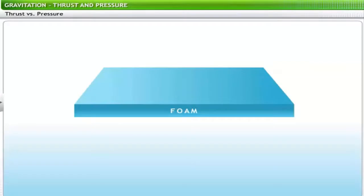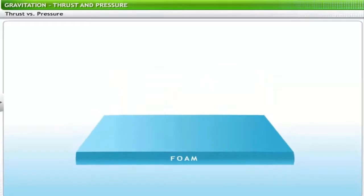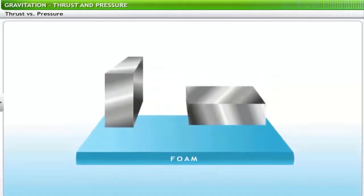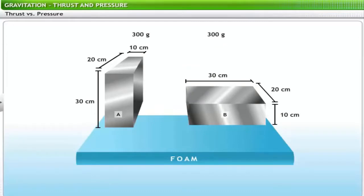Another example will help illustrate further the distinction between thrust and pressure exerted by a body. Take a piece of foam and two identical metal blocks, say A and B, weighing 300 grams. The length, breadth and thickness of these blocks are 30, 20 and 10 centimeters respectively.